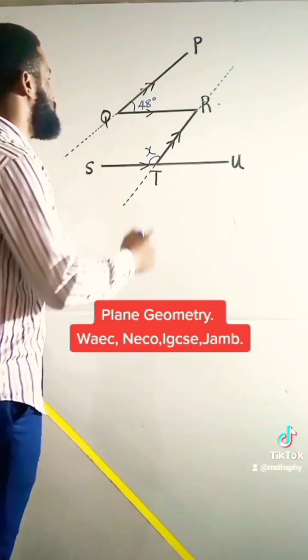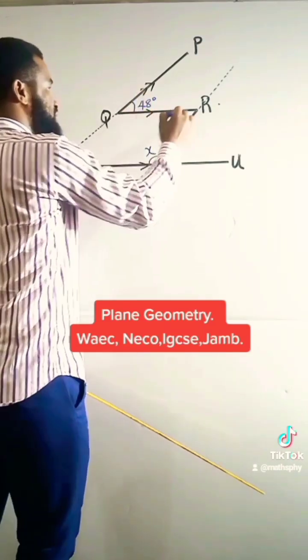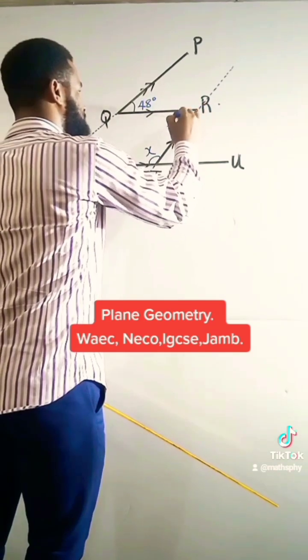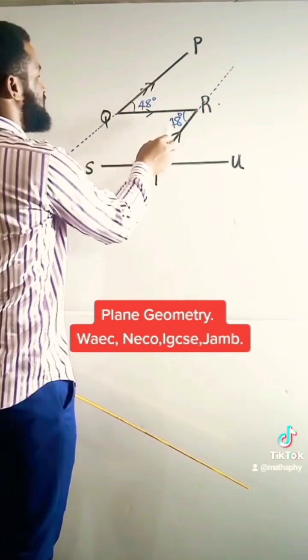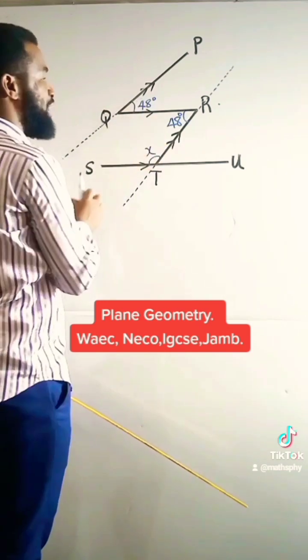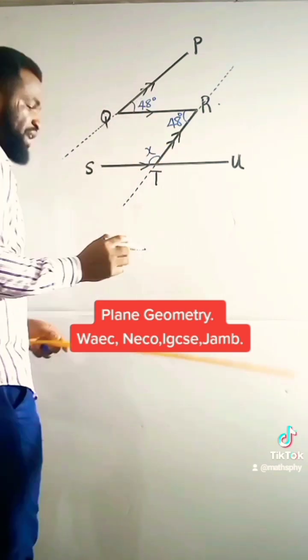Or corresponding, as the case may be. So if this is 45... 48, this is going to be 48. This is 48 because this 48 and 48 here are alternate angles, and also remember there is